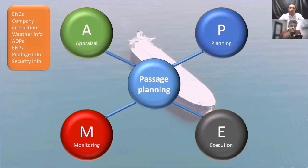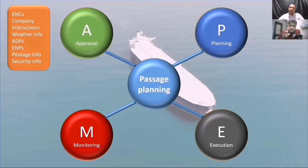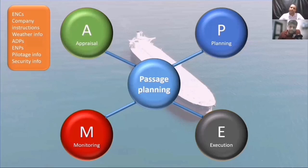You also have to understand security requirements. If you're going into a dangerous area like the West Coast of Africa or Gulf of Aden, before planning the passage, you must understand what are the security requirements — what are the high-risk areas, voluntary reporting areas, and so on. Also remember the agent — the agent sometimes sends some information. When you go to a port, all the information may not be available in publications; some information the agent will tell you.